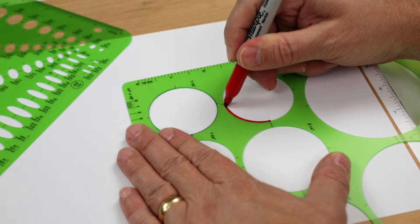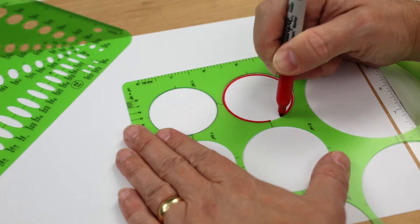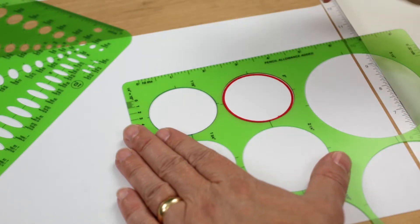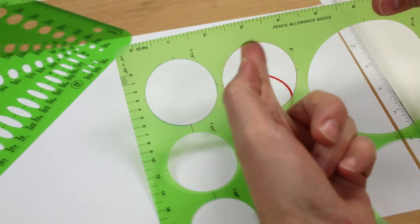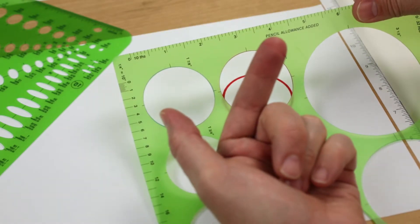Number two: don't use a permanent marker on your template. You will damage the interior of the template and make it harder to work with because of the residual ink. Plus, it makes a mess.